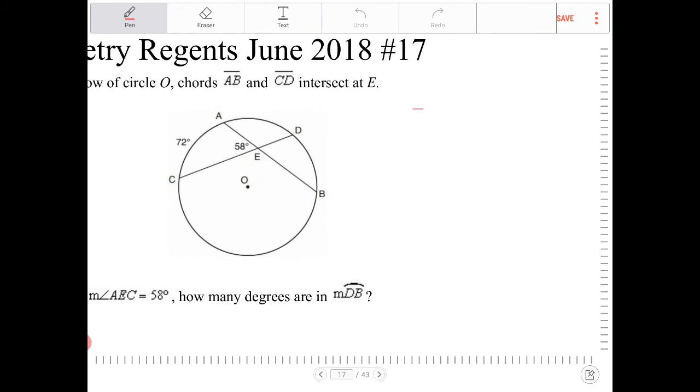To answer this question, you have to know what happens when you have two chords that intersect, and the angle formed between the two chords with the intercepted arcs.